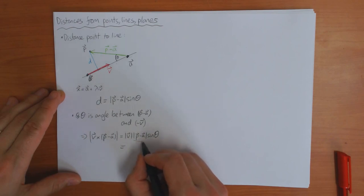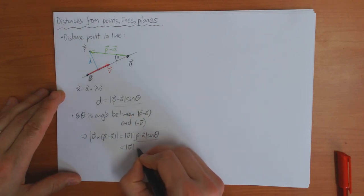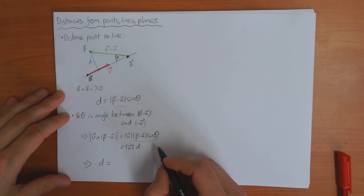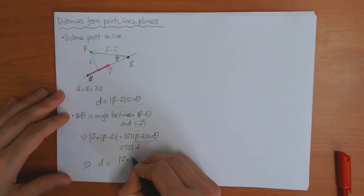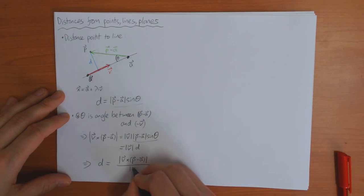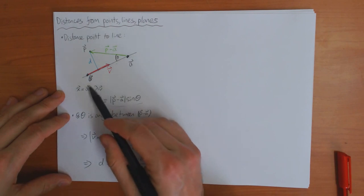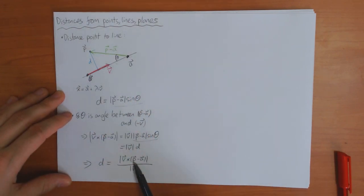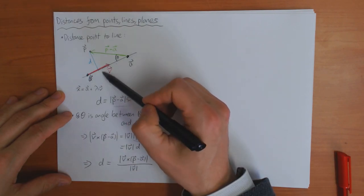What you've got here is just the distance to the line, so this equals |V| · D. Rearranging, we get the distance to the line is equal to |V × (P − A)| divided by |V|. So if you know the equation of the line in this form and the coordinates of the point, you can use this formula to find the distance from the point to the line.